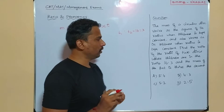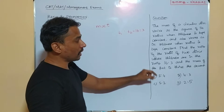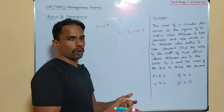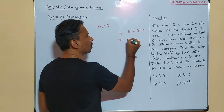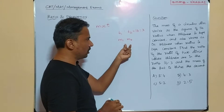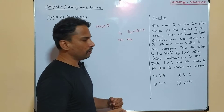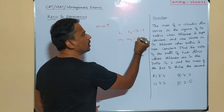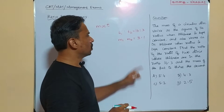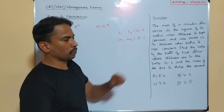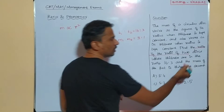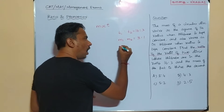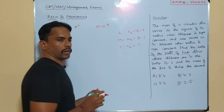And the mass of the first one is thrice the second, so they are comparing the mass of the two disks. Let me represent the mass of the two disks as M1 and M2. The mass of the first one is thrice the second, meaning if the second one's mass is one part, the first one's mass will be three parts. So M1 is to M2 is equal to 3 is to 1. What we are supposed to find is R1 is to R2, the ratio of the radii of the two disks.